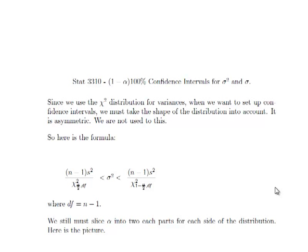We're not used to this. So let's look at the formula. We have (n-1) times s-squared over chi-square at alpha over 2 with the appropriate degrees of freedom, less than sigma-squared, less than (n-1) s-squared over chi-square at 1-alpha over 2 with the appropriate degrees of freedom. And those degrees of freedom are n-1.